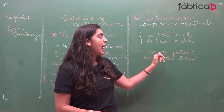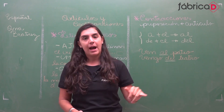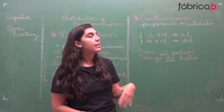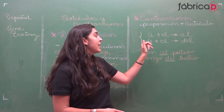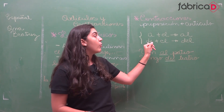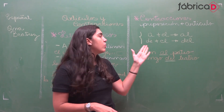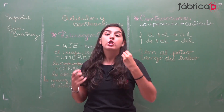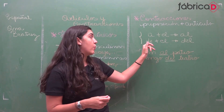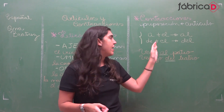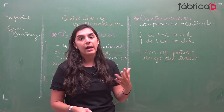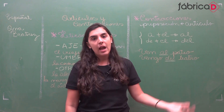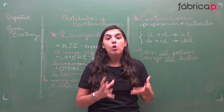Então, 'al pátio' — 'venha ao pátio'. E a segunda, tão usada como a primeira: preposição 'de' com artigo definido 'el', que fica 'del' — o nosso 'do' em português. Preposição 'de' com o artigo que se refere ao 'o'. Exemplo: 'vengo del teatro'.